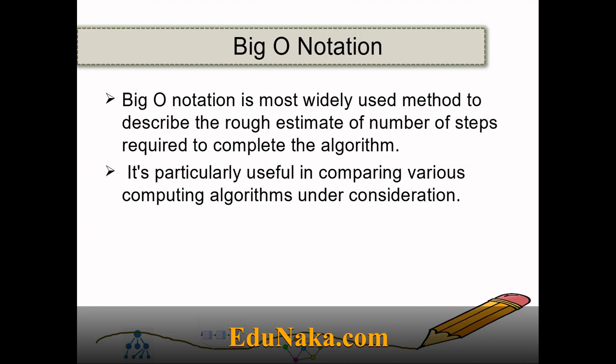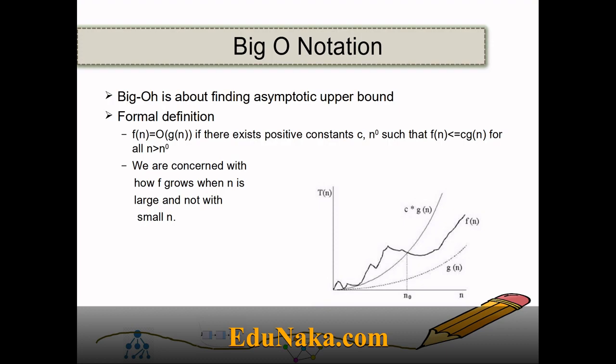Big O notation is used for finding the maximum amount of time required by an algorithm. The graph shows the upper bound of an algorithm. Big O is used to find the worst-case analysis of an algorithm — the maximum amount of time that an algorithm will need to compute, represented using Big O notation.